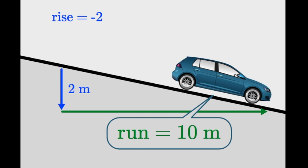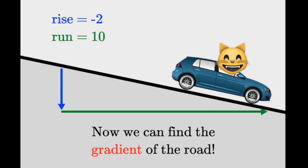So the rise is negative 2. How about the run? That's not so difficult. It's the 10 meters the car travelled horizontally. Let's just write 10. Units don't matter here because they cancel out when you calculate the gradient.